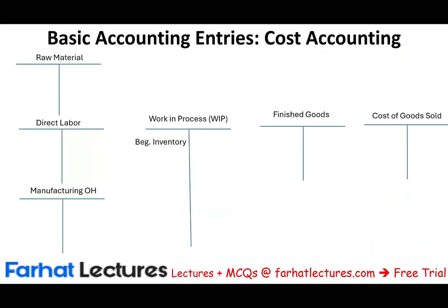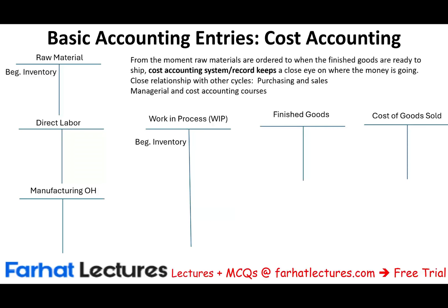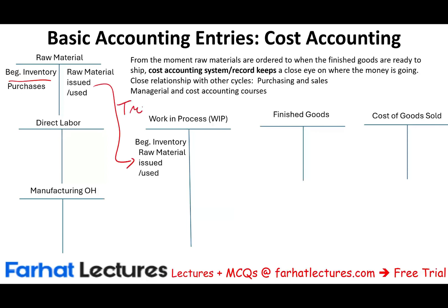Let's take a look at the big picture of how the asset is transferred. First, we have beginning inventory — raw material. Then we purchase raw material, then we issue raw material to work in process. Assets are transferred from raw material to work in process. We also have ending raw material inventory carrying over to the next period.